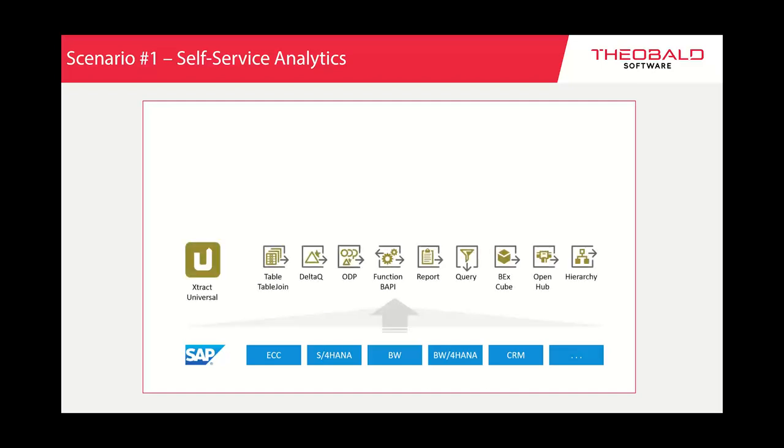On top of that, we have a product called Xtract Universal. It's a standalone tool you install on a Windows system, which can run in the cloud or on-premise, and it comes with 10 different built-in data extractors. Data does not live in one place in SAP — it exists in different shapes, forms, and data models, and there's not one interface to get to all the data. Over time we've developed these extractors to enable data integration wherever the data may live.